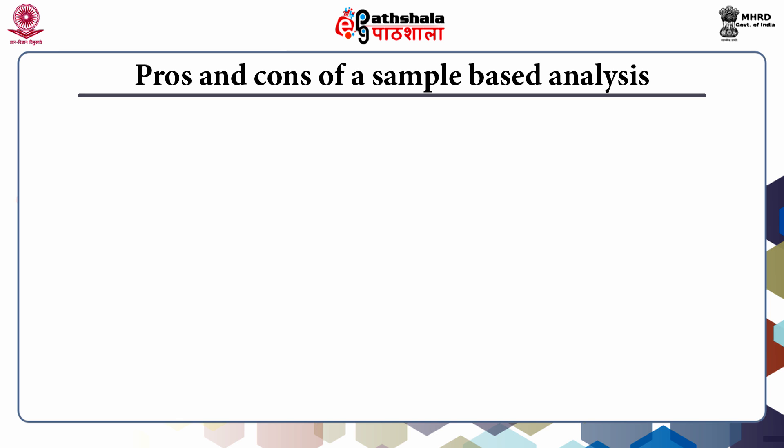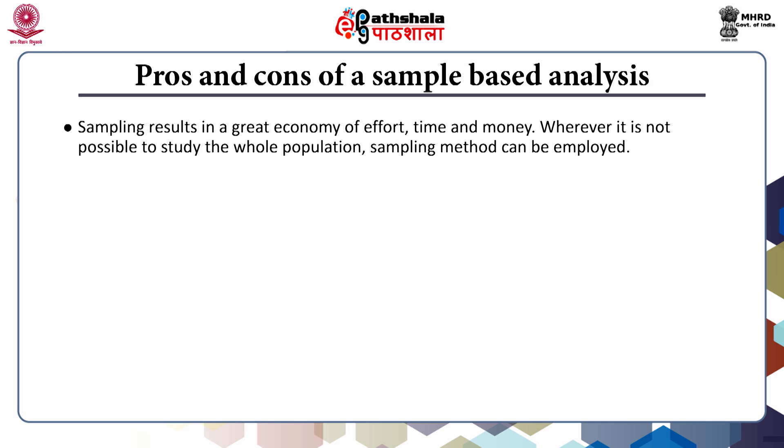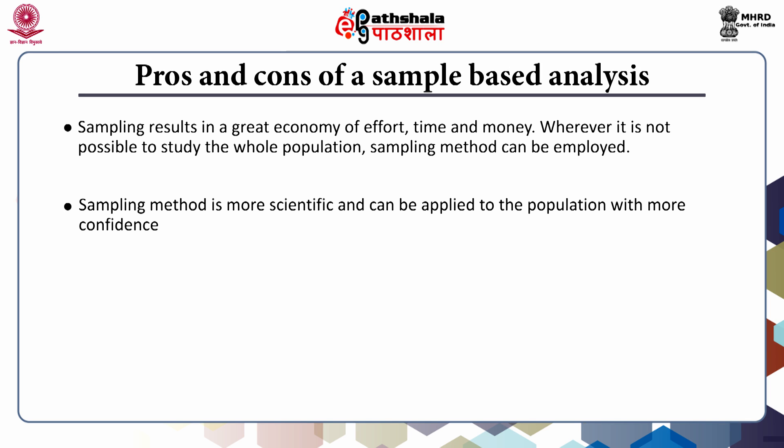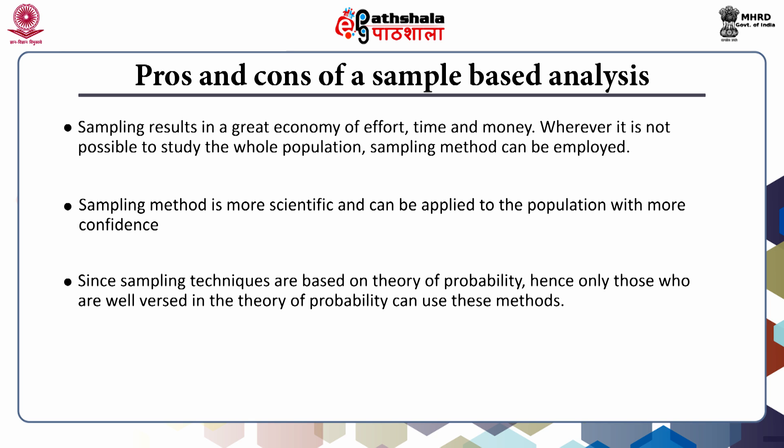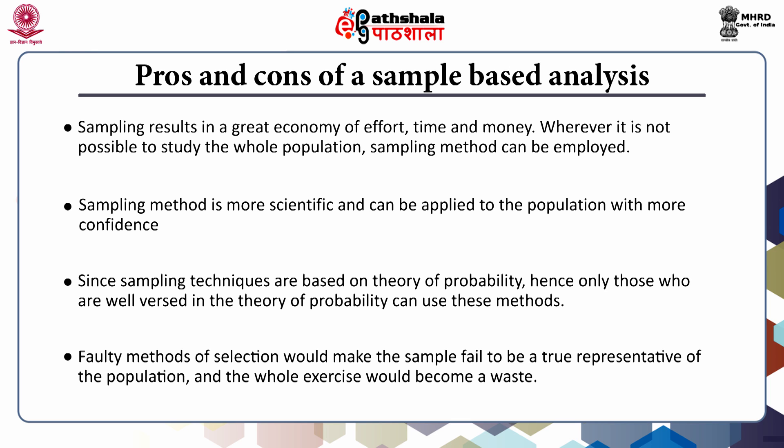Pros and cons of a sample-based analysis: while by and large science is driven by sample-based analysis, there are some facets that a researcher needs to consider before initiating one. Sampling results in a great economy of effort, time, and money. Wherever it is not possible to study the whole population, a sampling method can be employed. Sampling method is more scientific and can be applied to the population with more confidence. However, information about every item of the population cannot be obtained by this method. Since sampling techniques are based on the theory of probability, only those who are well versed in the theory of probability can use these methods. Faulty methods of selection would make the sample fail to be a true representative of the population and the whole exercise can become a waste.